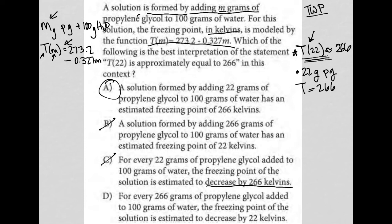Choice D, for every 266 grams of propylene glycol, no, again, 266 is not a number of grams, that is for sure. 22 is the number of grams, not 266, so D is gone. So I like A even better now, so the answer I would go with here is choice A.